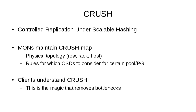CRUSH — Controlled Replication Under Scalable Hashing. The mons maintain what's called a CRUSH map. The default CRUSH map just says there's a bunch of nodes or hosts, and all data shall be replicated such that it's on more than one host. But you can configure this to represent the physical topology of your data center — rooms, rows, racks, and so on — and configure your policy so that you've always got a replica in both rooms in case one of them catches fire. The clients understand CRUSH, and this is the magic that removes bottlenecks, because once the clients have a copy of the CRUSH map, they can figure out which OSDs to talk to directly.